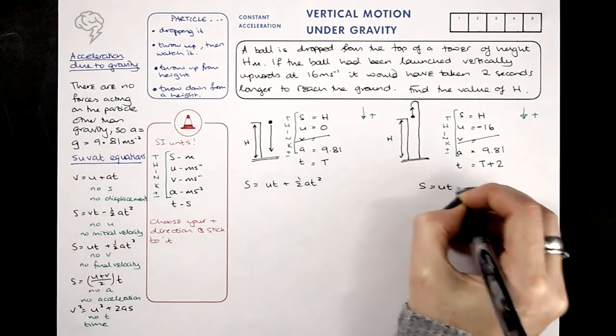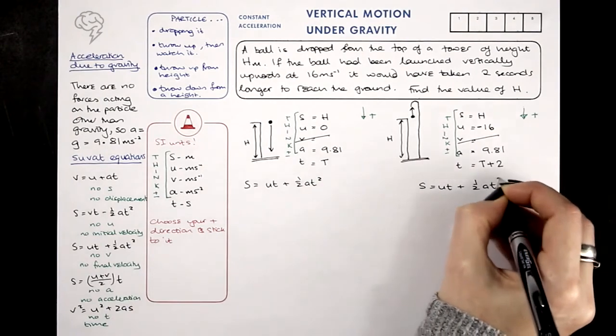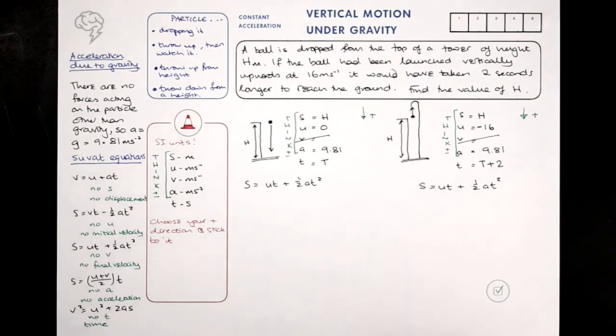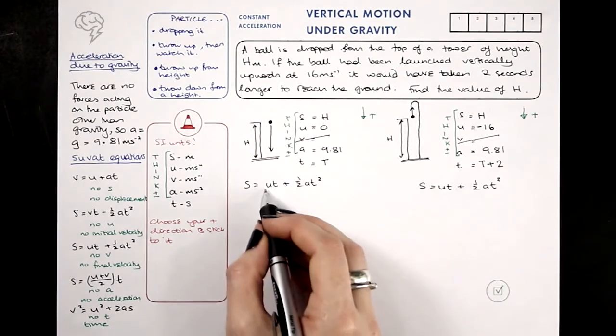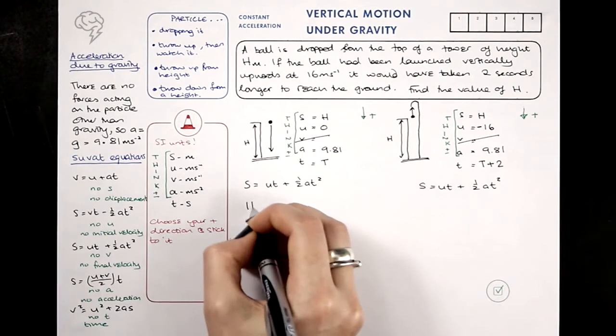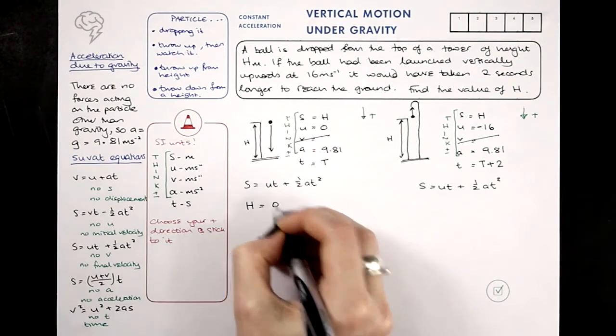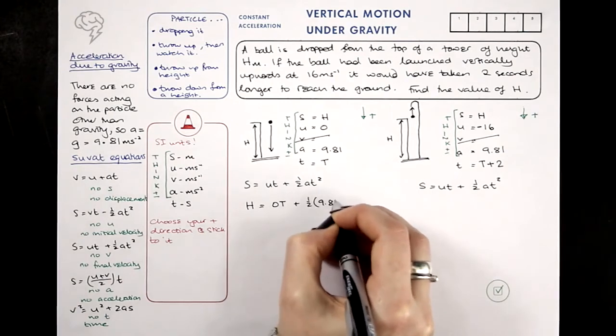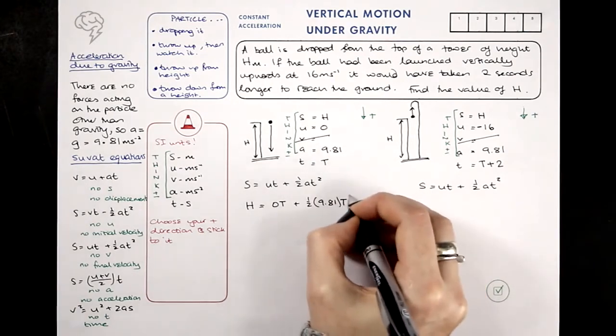Always write down the equation before you use it. You can pick up extra marks for doing that, or rather you could, in certain circumstances, drop marks if you don't do it. Let's sub in. The displacement is H. The initial velocity is zero, T is T, A is 9.81, and T is T.